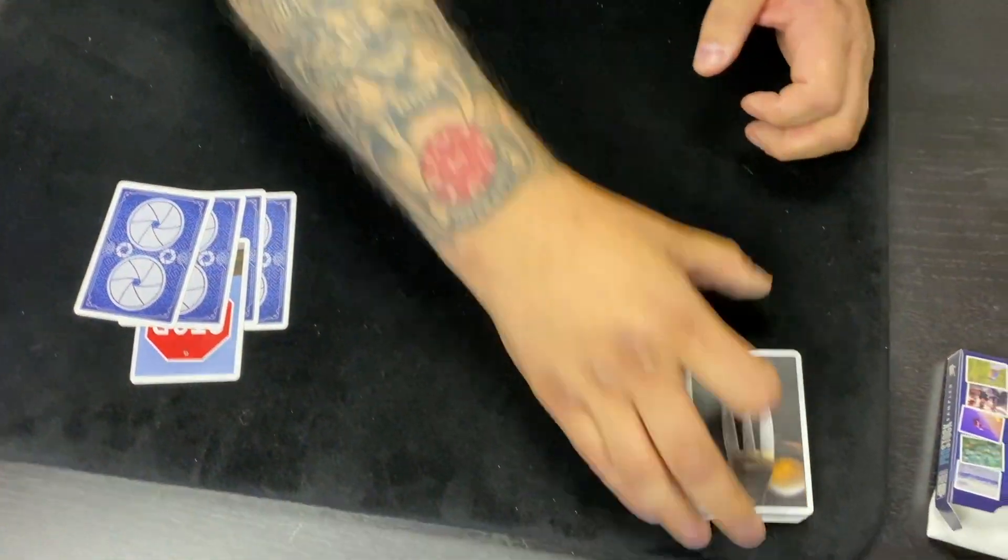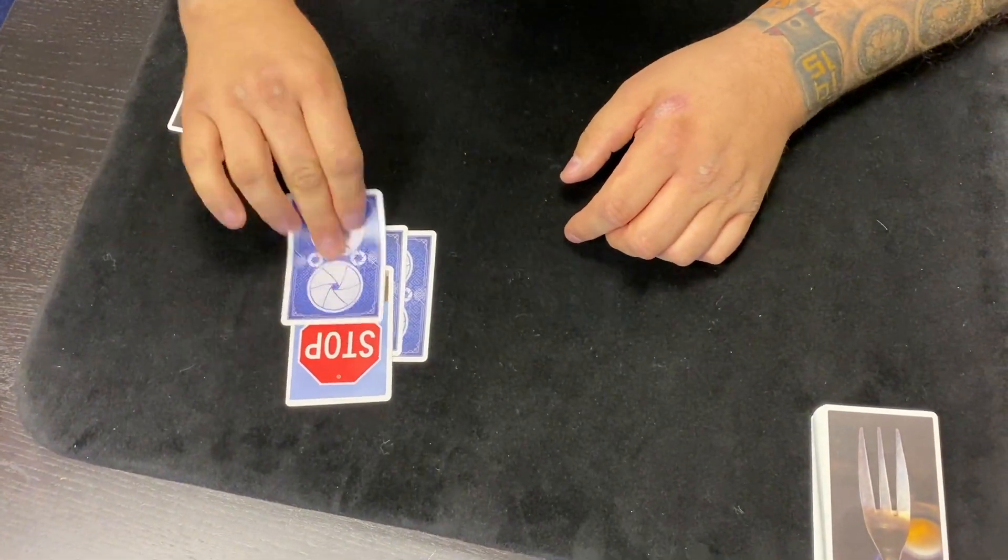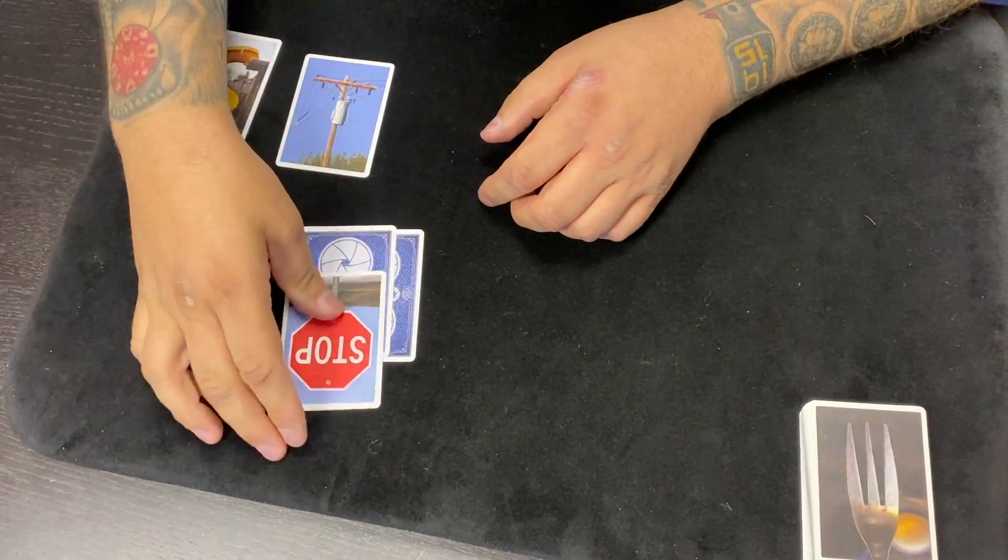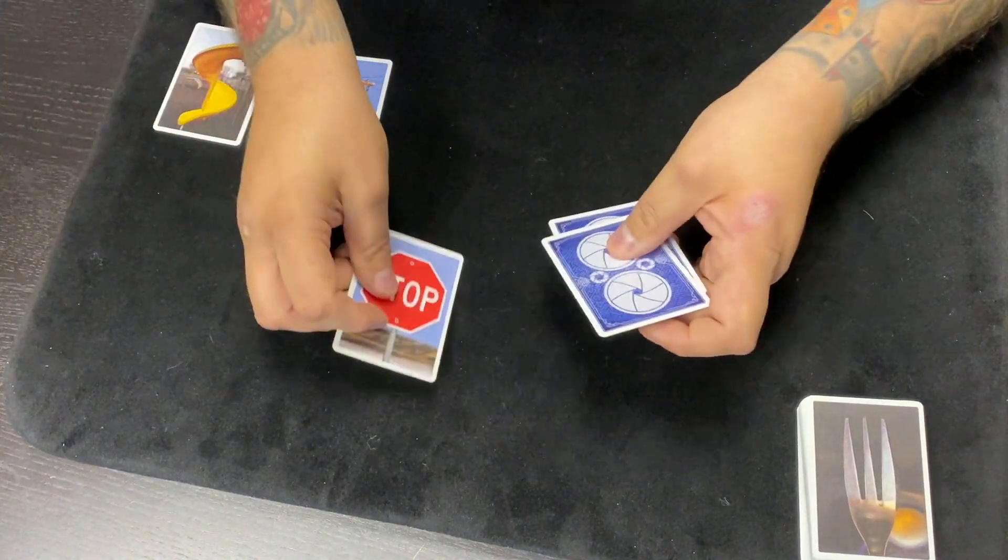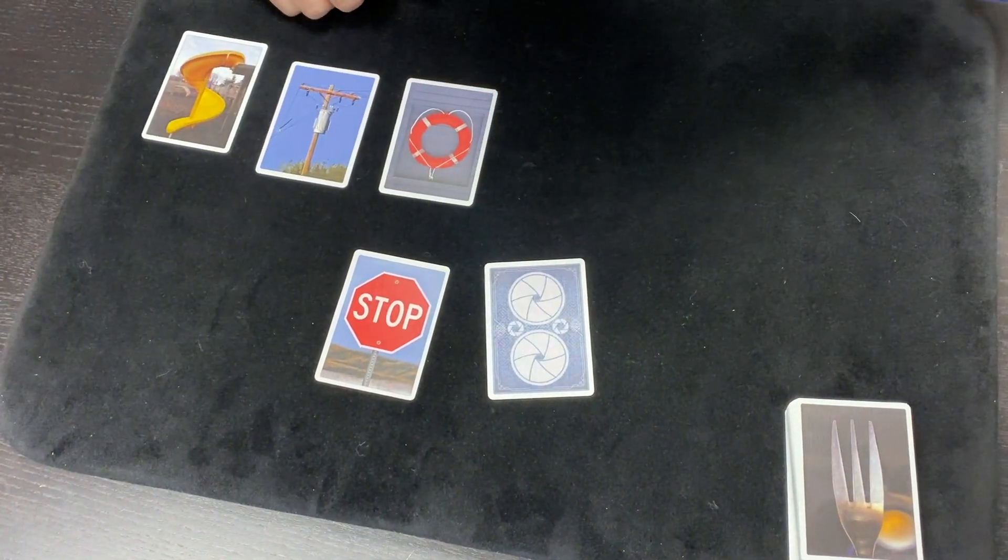So you put it next to a slide. You put it next to what's that, like a telephone pole type thing. You put it next to this one here, which is, it's the sort of thing that you have on the side of a lifeboat, isn't it really.